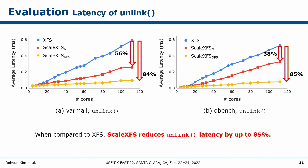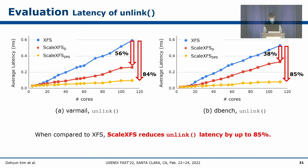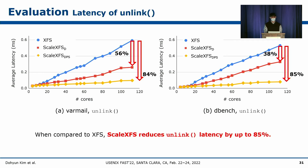ScaleXFS-D and ScaleXFS both improve the latency of metadata operations by reducing lock contention. The graphs show average unlink latency with varying core counts for BarMail and DBench; x-axis is number of cores, y-axis is average unlink latency, lower is better. With only the double log list enabled, unlink latency decreased by 56% and 38% in BarMail and DBench respectively. With all proposed features enabled, unlink latency decreased by 84% and 85% respectively.